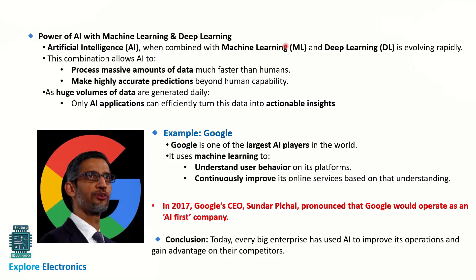When AI is combined with machine learning and deep learning, it evolves very rapidly. This combination allows processing of massive amounts of data much faster than humans, making highly accurate predictions beyond human capability. As huge volumes of data are generated daily, only AI applications can effectively turn this data into actionable insights. Google, one of the largest AI players in the world, uses machine learning to understand user behavior — in 2017, Google CEO Sundar Pichai said Google would operate as an AI-first company. Today, every big enterprise uses AI to improve operations and gain advantage over competitors.